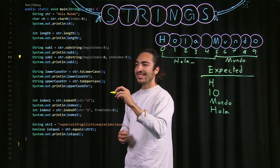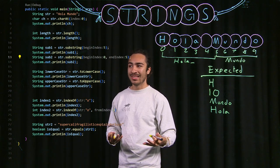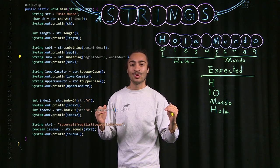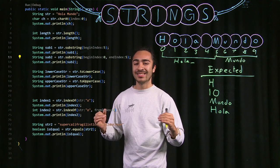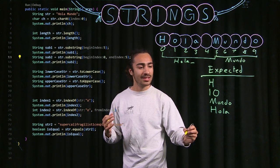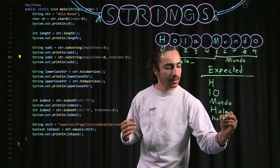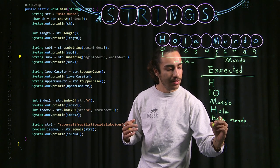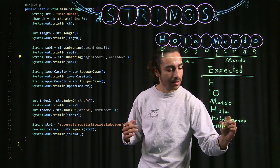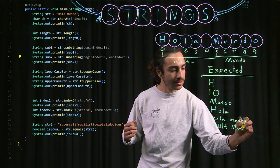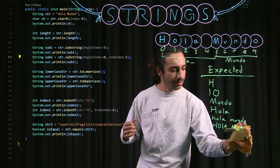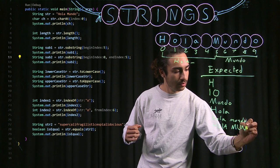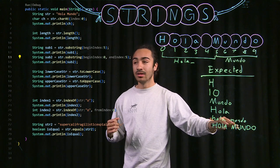For lowercase and uppercase, they do exactly what they sound like. If you do .toLowerCase, it turns all the characters in that string to their lowercase versions. And if you do toUpperCase, it turns them all to their uppercase versions. This would be HolaMundo, all lowercase. And our second example would be HolaMundo, all uppercase.